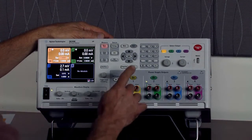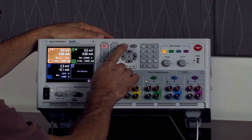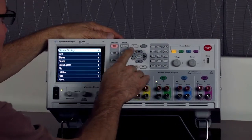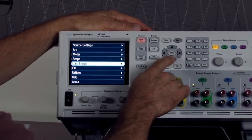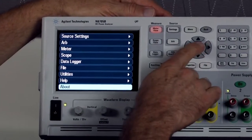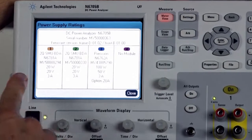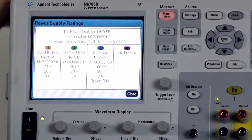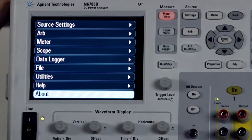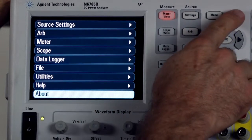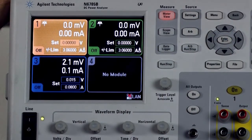Here it describes the different modules that are in our DC power analyzer. Again, I'm really only focused on slot one. We do have an N6781A there and that's what's necessary for the demonstration, so the hardware is set correctly. We'll hit back and go to this main menu.